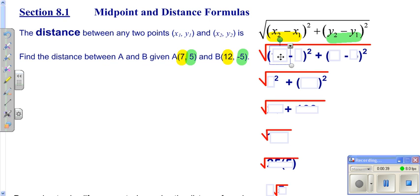You're going to end up having 12 minus 7 all squared, plus negative 5 minus 5. 12 minus 7 is 5, so we get 5 squared which is 25. Subtract here, you get negative 10, but negative 10 squared is negative 10 times negative 10, which is 100. So 25 plus 100 gives you 125.